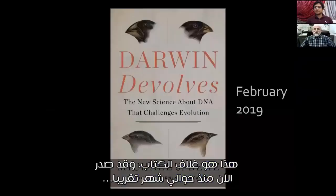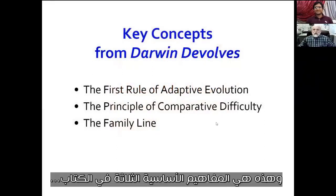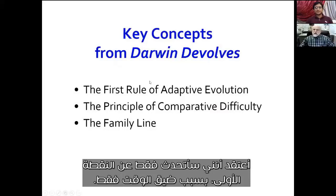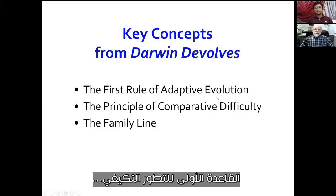Let me skip over to the book. Here's the cover — it just came out a month or so ago. There are three key concepts from the book: the first rule of adaptive evolution, the principle of comparative difficulty, and the family line. I'll just talk about the first one, because of time constraints.